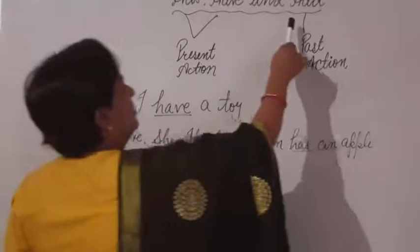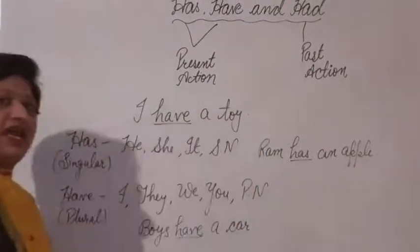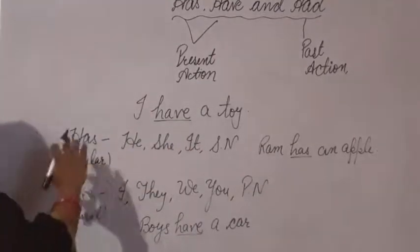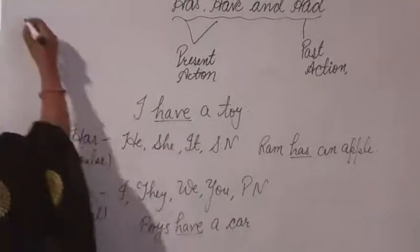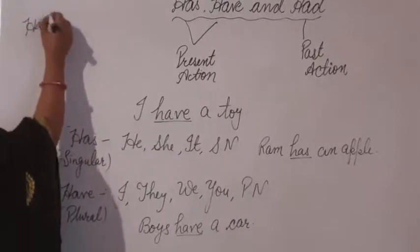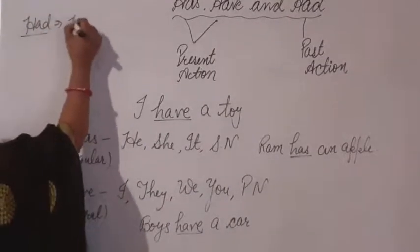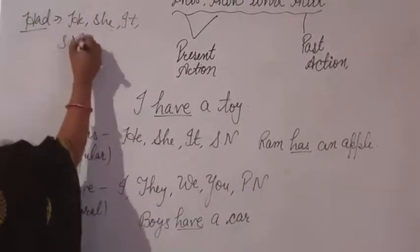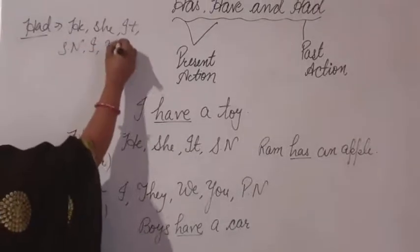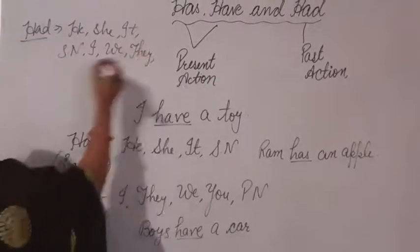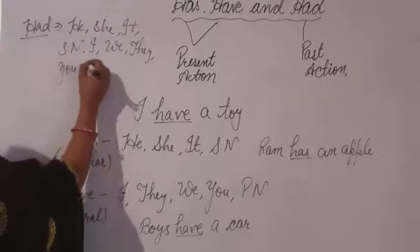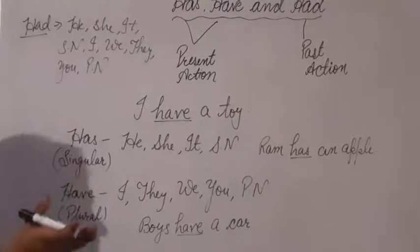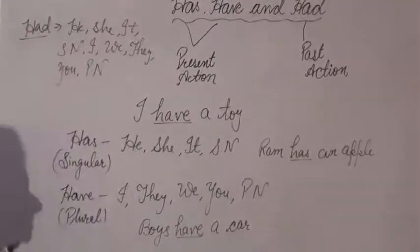But had is used for the past tense, and it is used with all subjects — there is no differentiation. Had is used with all subjects: he, she, it, singular nouns, I, we, they, you, and plural nouns. With all subjects, singular and plural, we will use had.